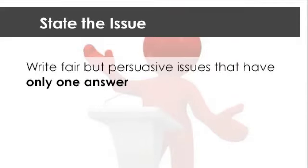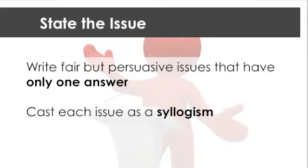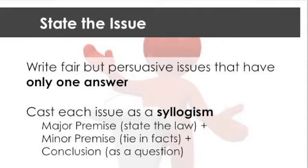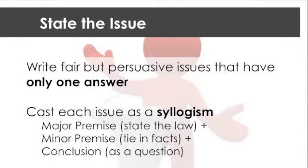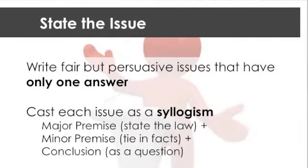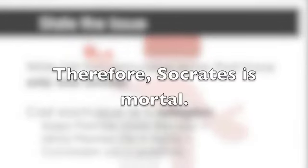Write fair but persuasive issues that have only one answer. Cast each issue as a syllogism. Syllogisms are the basis of logical thought. You have a major premise stating the law — for example, 'all men are mortal.' A minor premise presenting the facts that tie into that major premise — 'Socrates is a man.' And a conclusion — 'therefore, Socrates is mortal.'